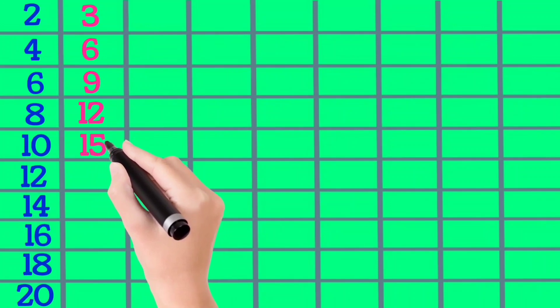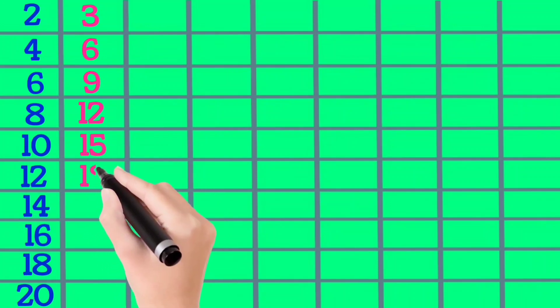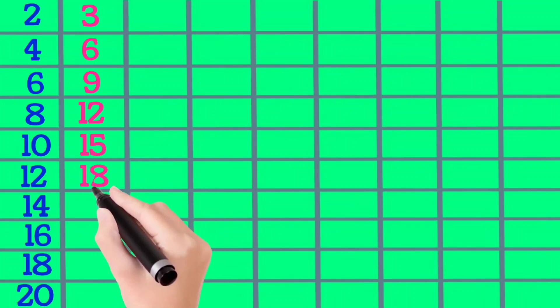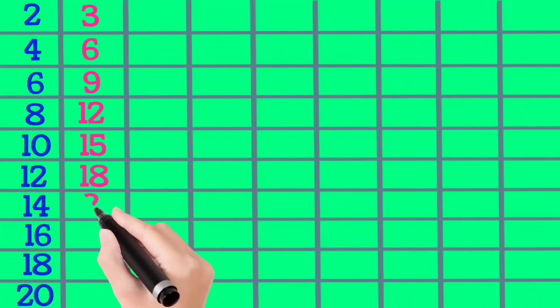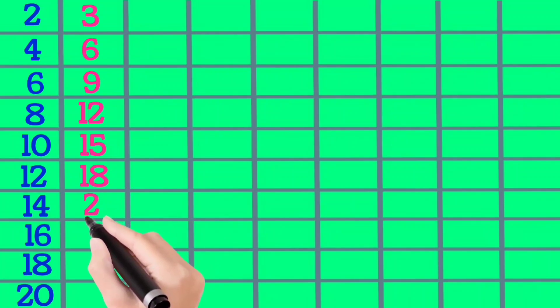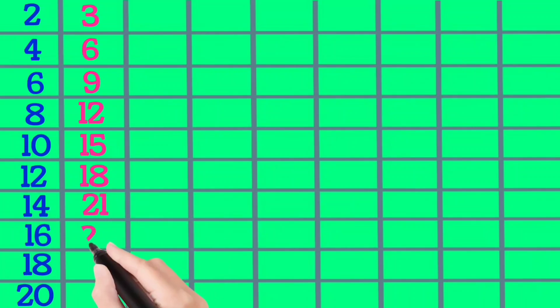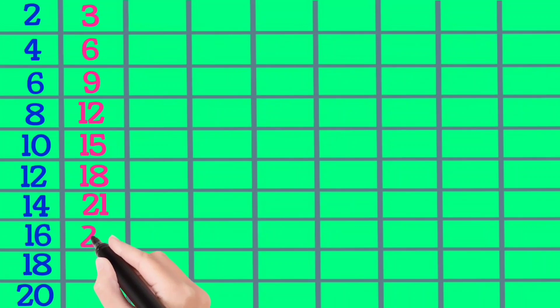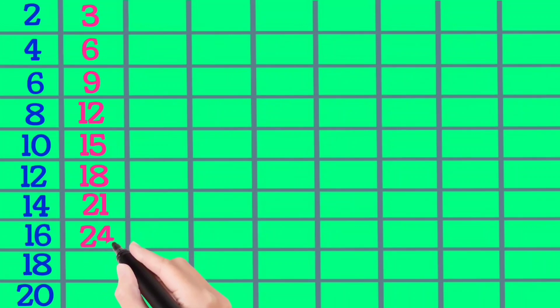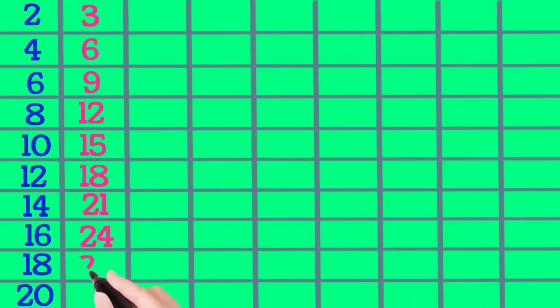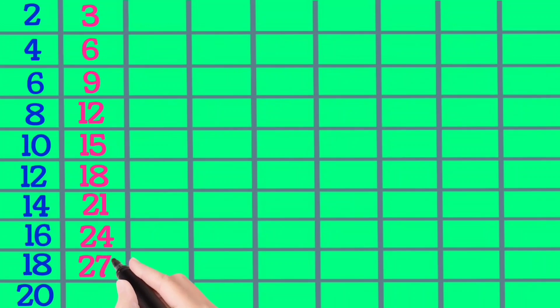3×6 is 18, 3×7 is 21, 3×8 is 24, 3×9 is 27, 3×10 is 30.